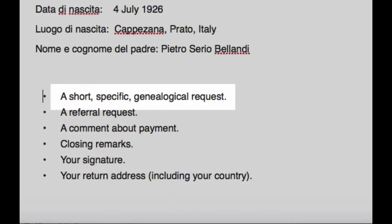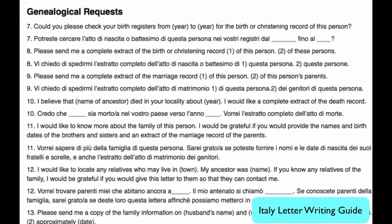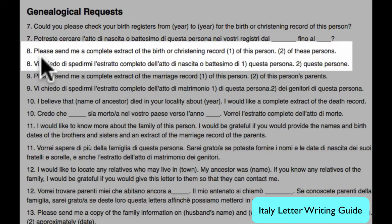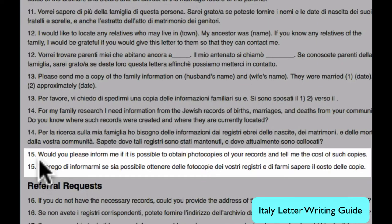Next, we will give details on exactly what it is we're asking for. In the letter writing guide, you will find a range of different requests. I'm going to use number 7 and ask them to check their birth registers for her birth, and number 8, asking them to send me a complete extract of the birth record. I am going to use number 15 and ask them to let me know if it's possible to get a photocopy and what that would cost.